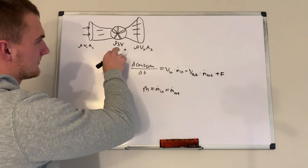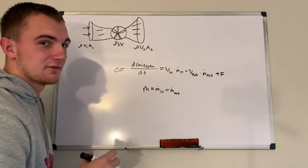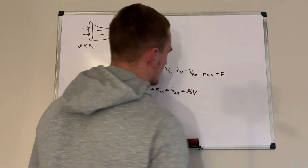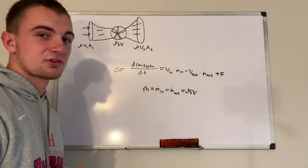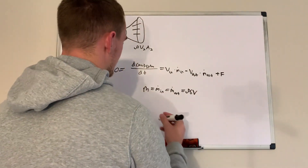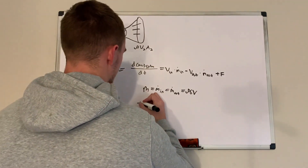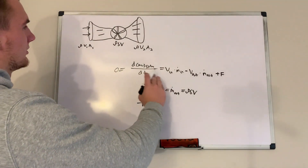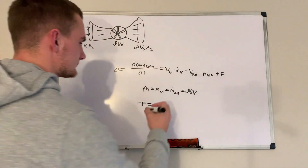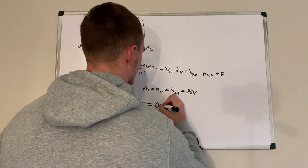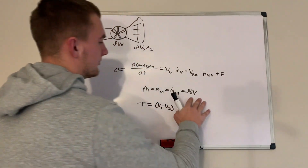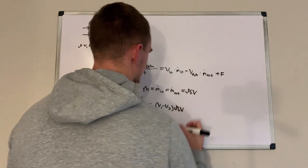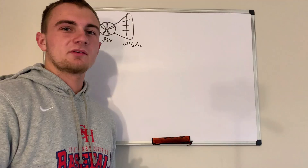This mass flow rate equals the turbine mass flow rate: rho·S·v. Plugging this in and solving for force F, we bring F to the other side to get negative F. Substituting v1 for v_in and v2 for v_out, we get: negative F = (v1 − v2) · rho·S·v.